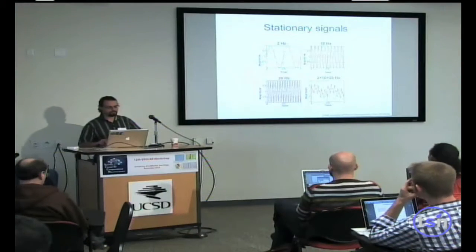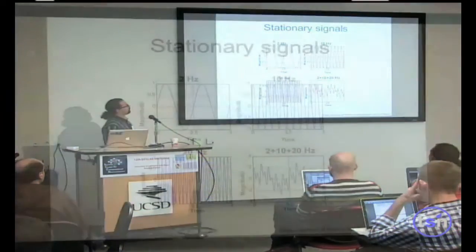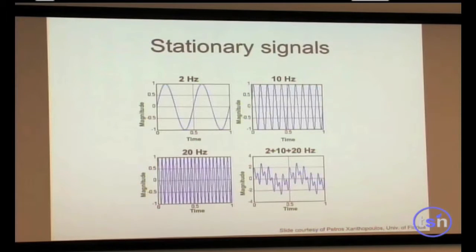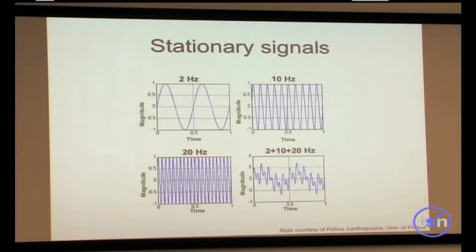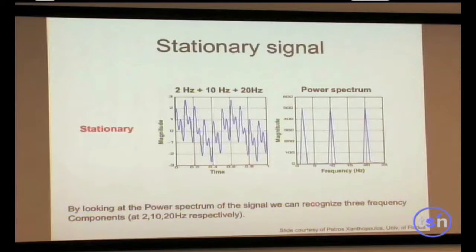Moving into the theory: here's a sinusoid at 2 Hz, one at 10 Hz, and one at 20 Hz. We add these three together and get a mixed signal. We then compute the power spectrum and recover three peaks — one at 2 Hz, one at 10 Hz, and one at 20 Hz — exactly the frequencies we put in. This is what the power spectrum is for: to uncover the underlying frequencies in a signal.